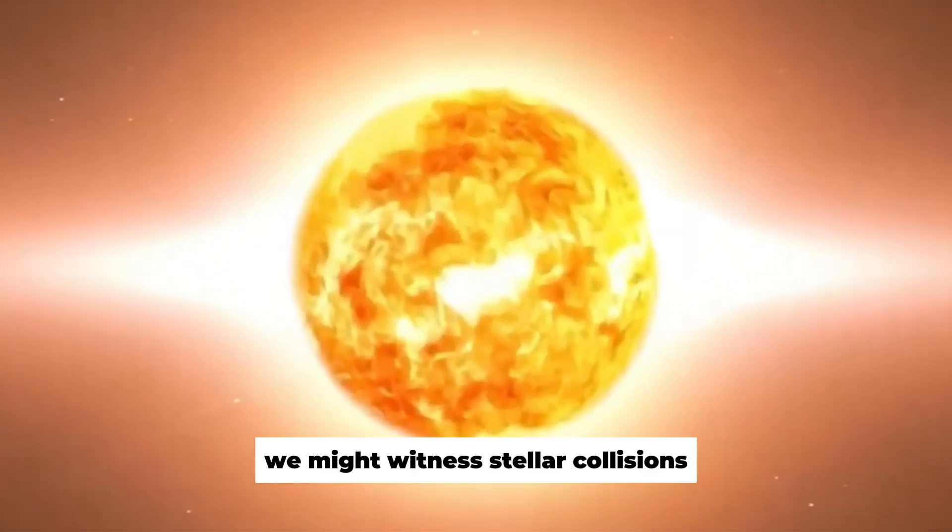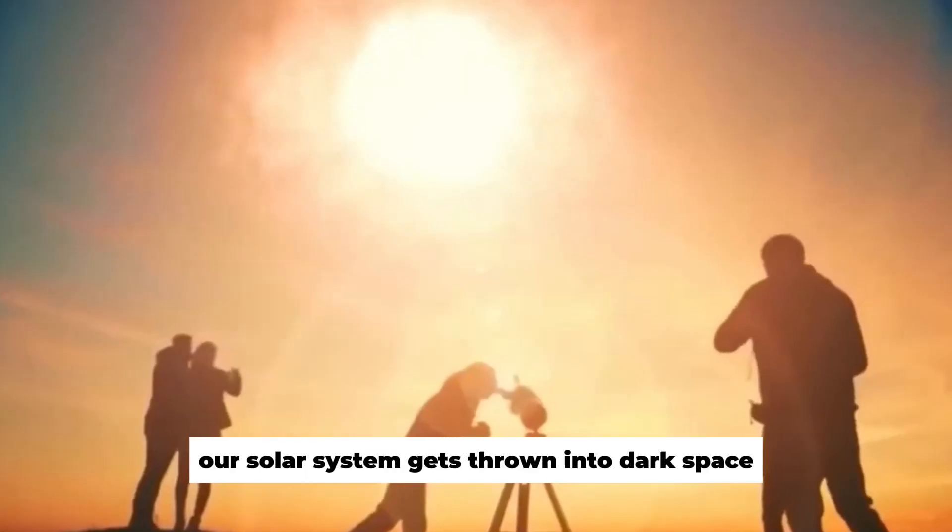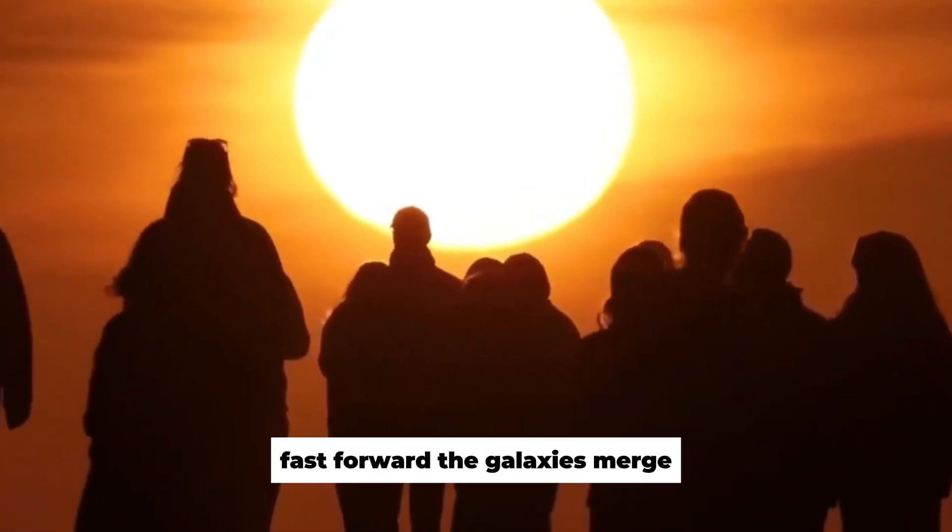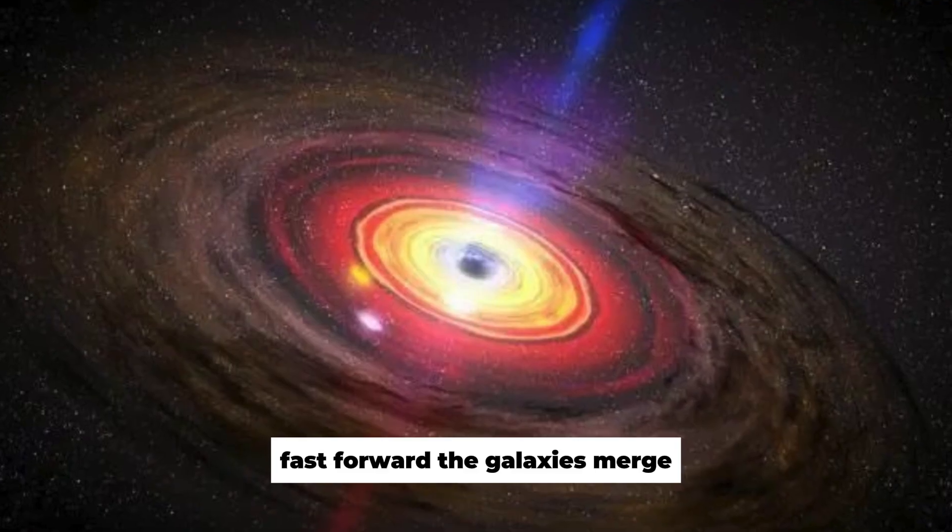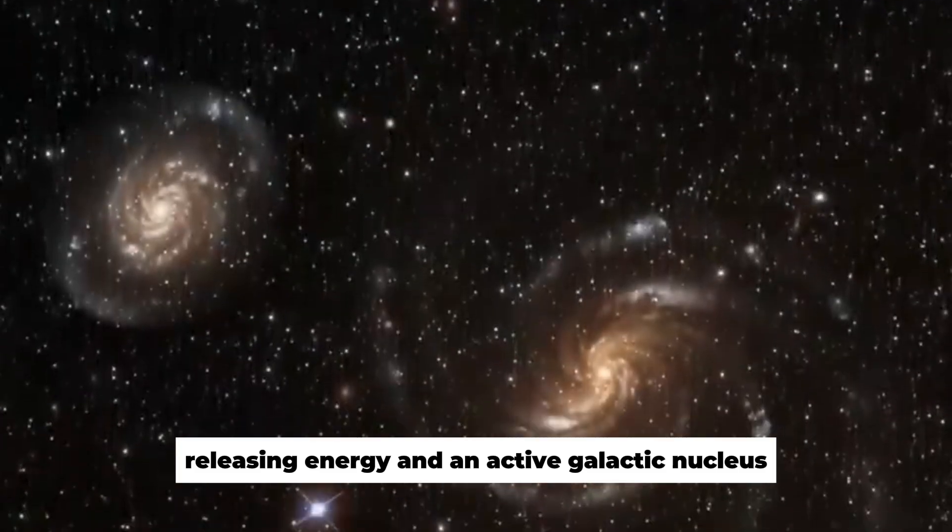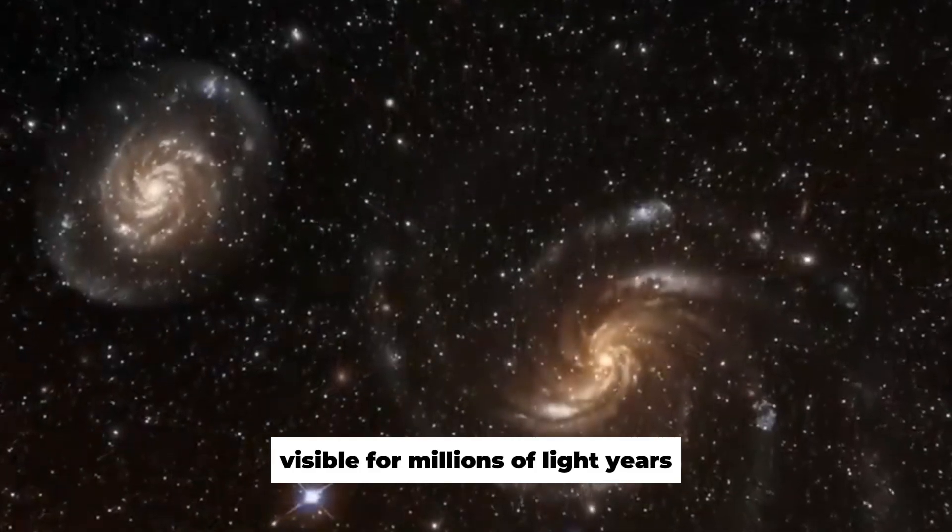We might witness stellar collisions, or perhaps our solar system gets thrown into dark space like a tennis ball released on a rope. Fast forward, the galaxies merge, and the black holes at their centers start a dance. They eventually merge into a supermassive black hole, releasing energy and an active galactic nucleus, visible for millions of light-years.